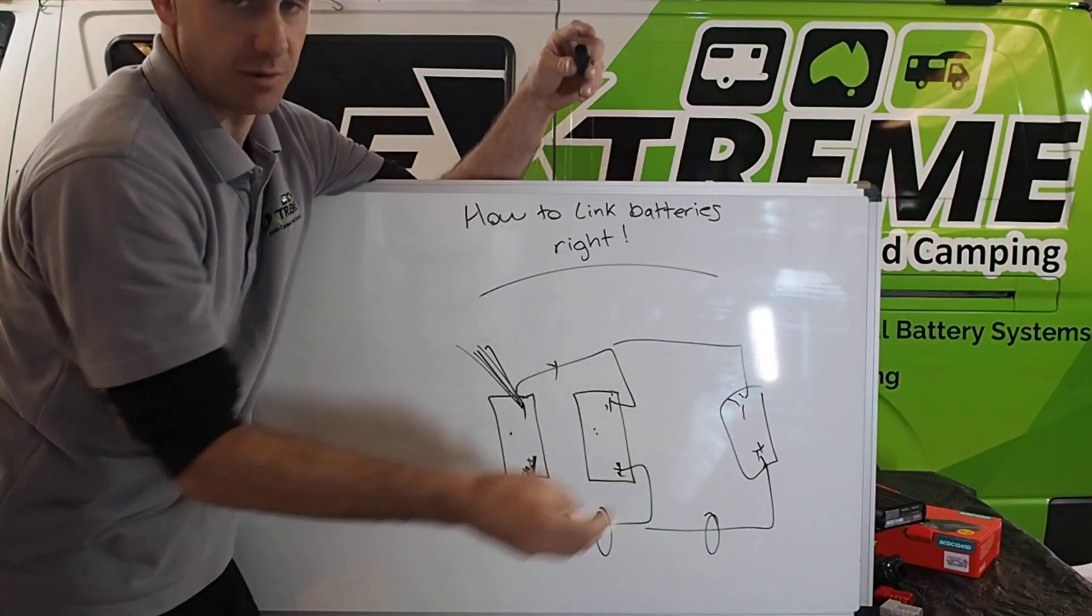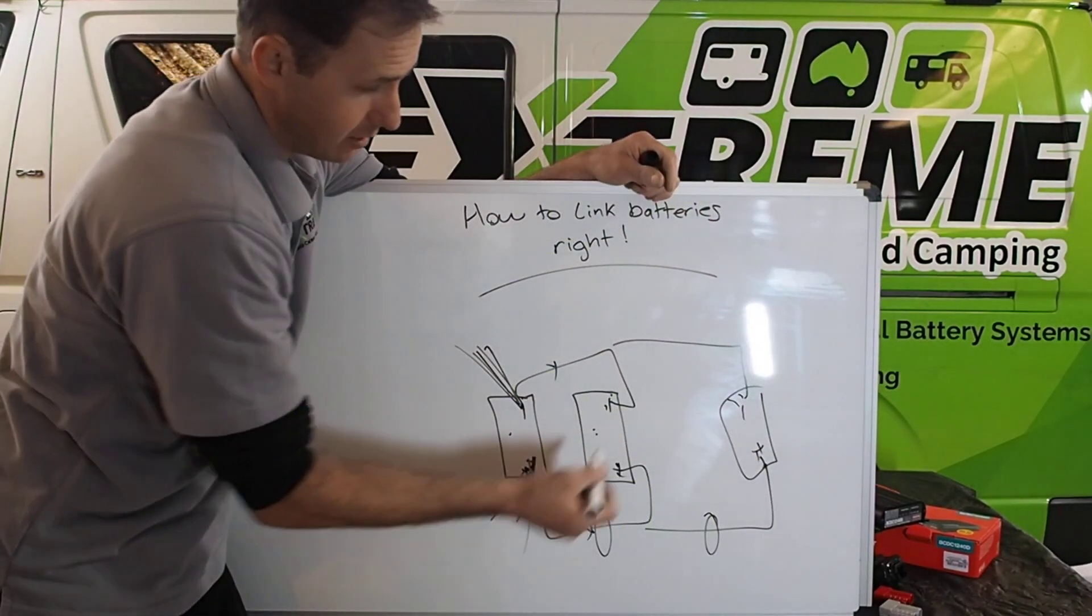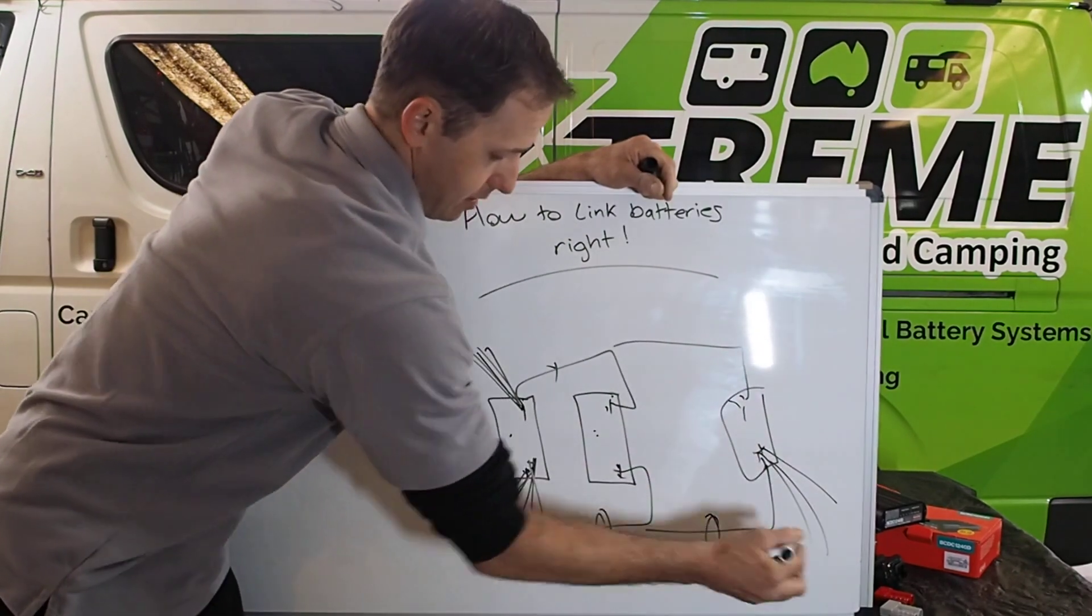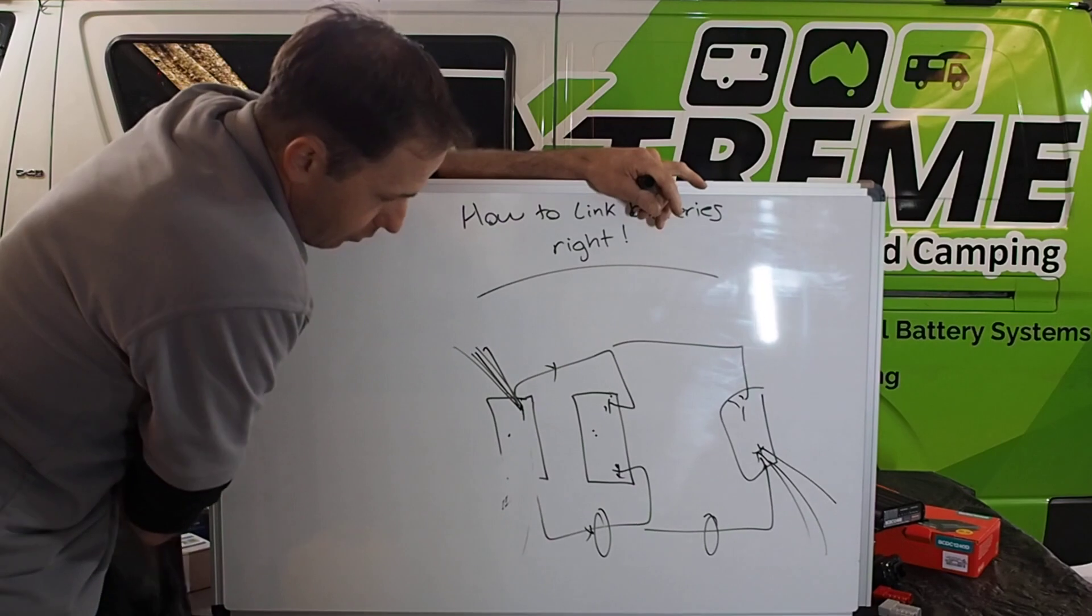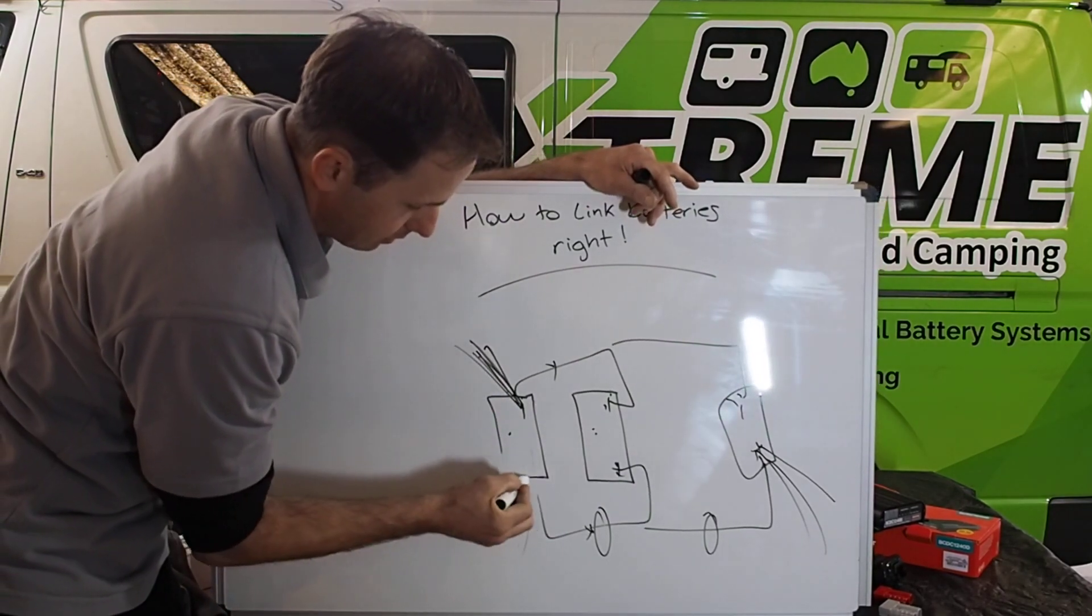So if you had a triple system like this, that's fine. Pull your positives from there. Pull them all from there. Pull your negatives from there. It's simple.